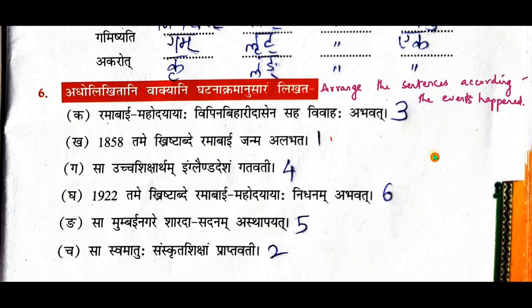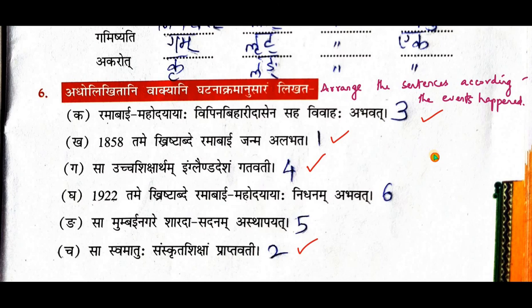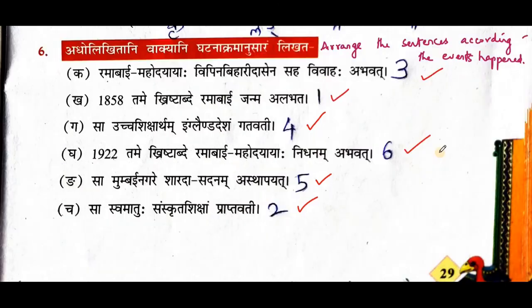The correct chronological order is: First — in 1858 she was born. Second — sa swamathu samskritta siksham praptavati, she learned Sanskrit from her mother. Third — ramabhai vipinabiharida sena saka vivahaha bhavat, she was married with Vipinabihari Das. Fourth — sa uccha sikshartham england desham gathavati, she went to England for higher studies. Fifth — sa mumbayi nagare sharada sadhanam astha apayat, she established Sharada Sadhanam in Mumbai. Sixth — in 1922 ramabhai mahodayaya ha nidhanam abhavat, she passed away. With this the abhyasa video for this lesson comes to an end.